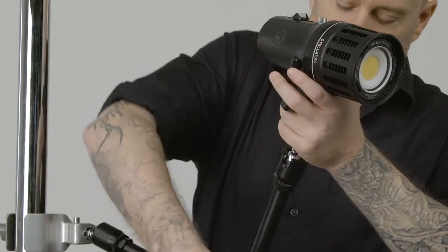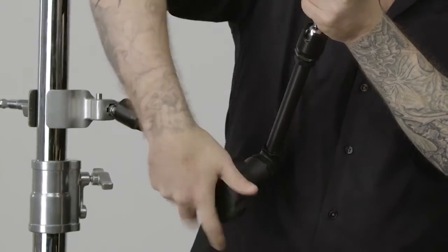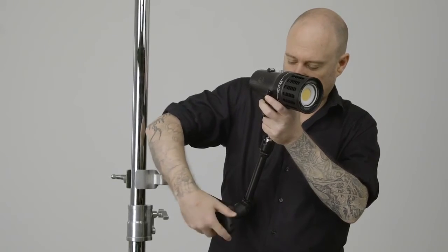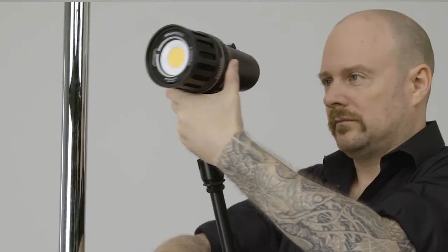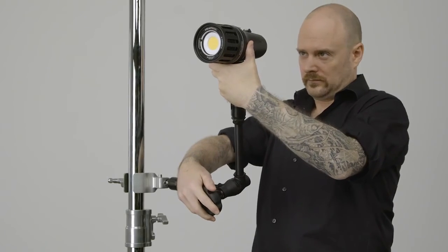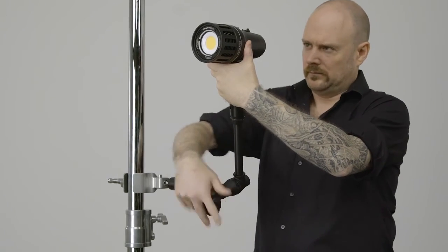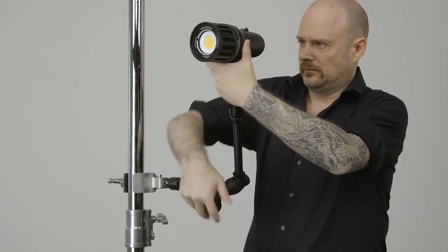Hold the light with one hand and loosen the hand wheel counterclockwise until all joints loosen simultaneously. Position the light fixture where you'd like then tighten the hand wheel clockwise until all joints are locked into place.